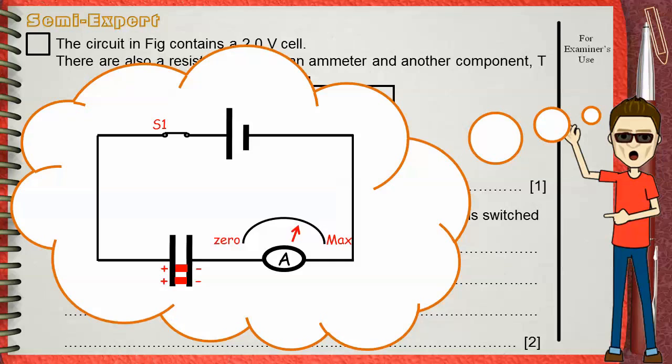When the capacitor charges more and more, the amount of electric current that is allowed to pass will also decrease. So the ammeter reading will decrease more and more. When the capacitor becomes fully charged, no current at all is allowed to pass through the capacitor.